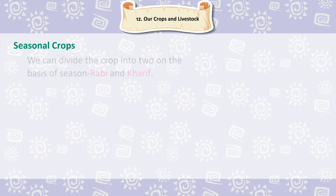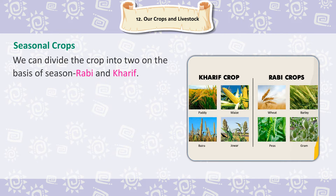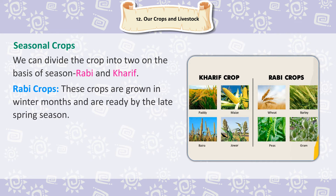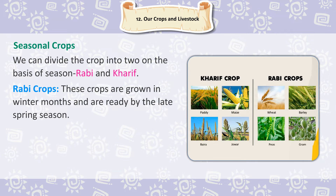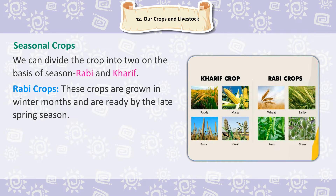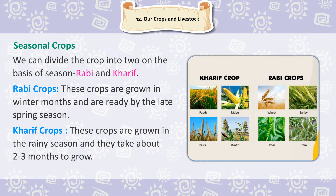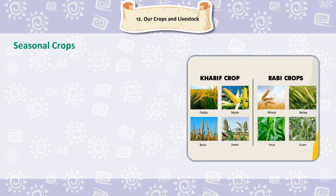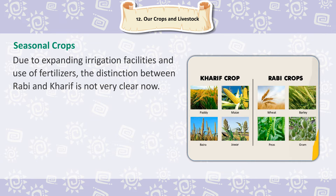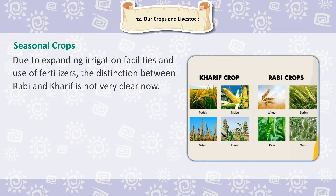Seasonal Crops. We can divide crops into two on the basis of season: Rabi and Kharif. Rabi crops are grown in winter months and are ready by the late spring season. Kharif crops are grown in the rainy season and take about two to three months to grow. Due to expanding irrigation facilities and use of fertilizers, the distinction between Rabi and Kharif is not very clear now.